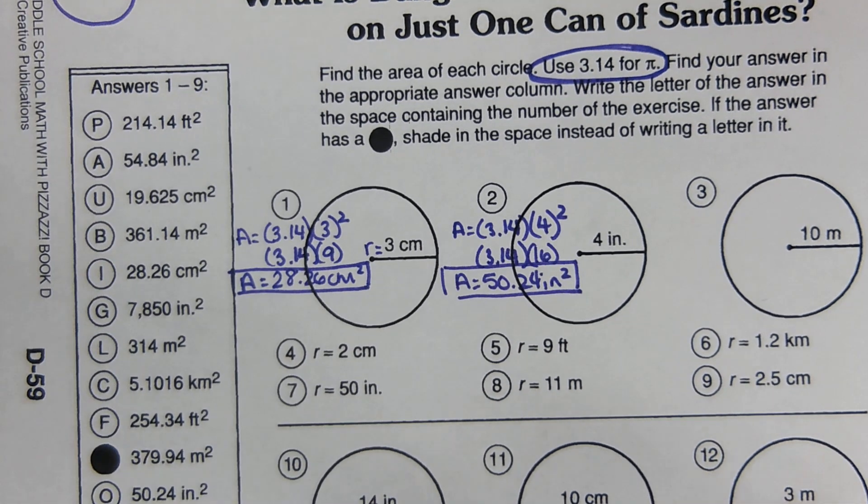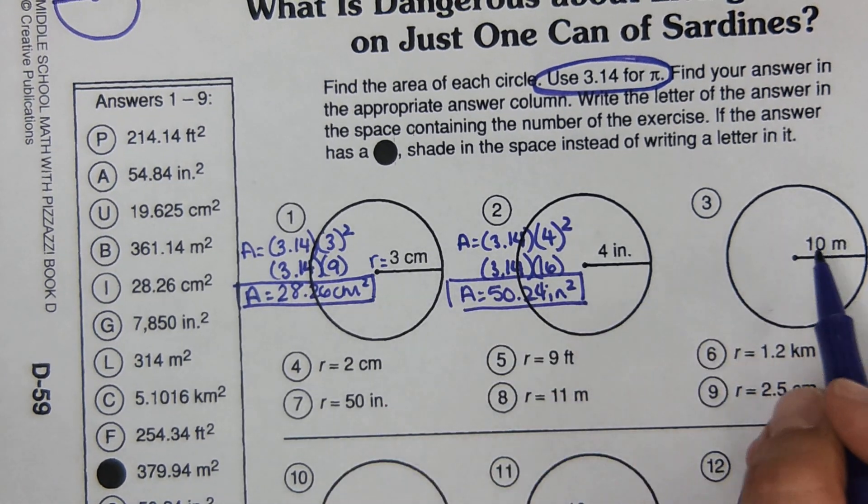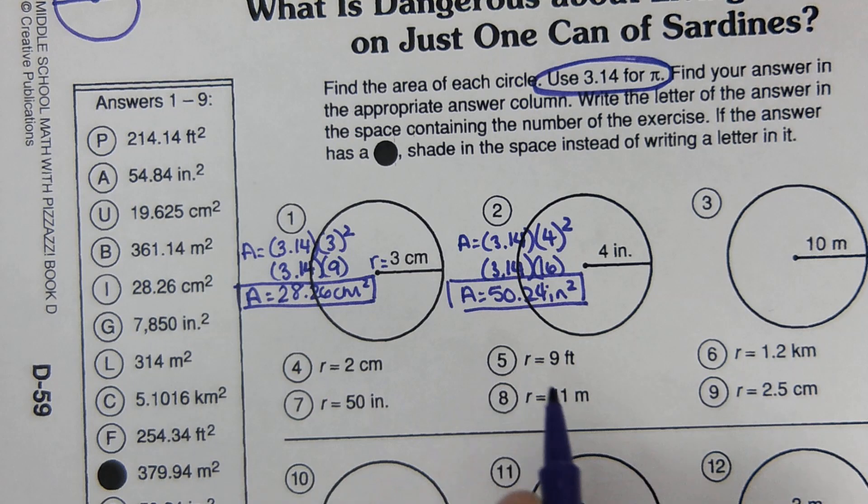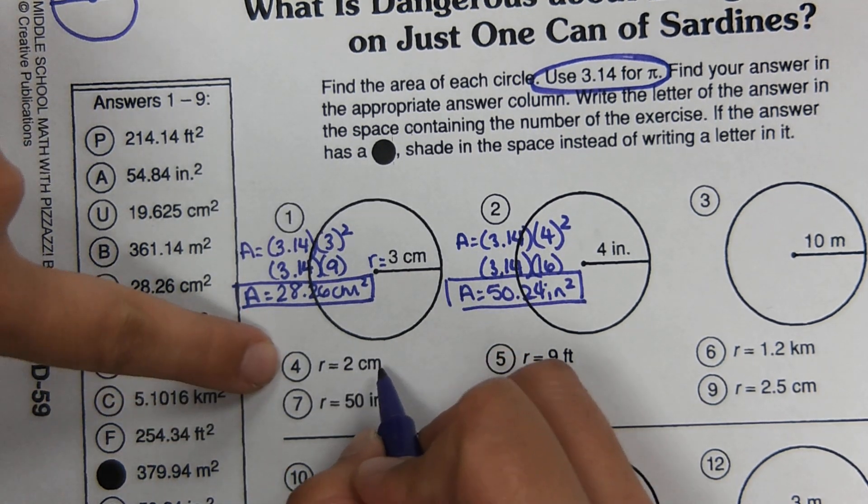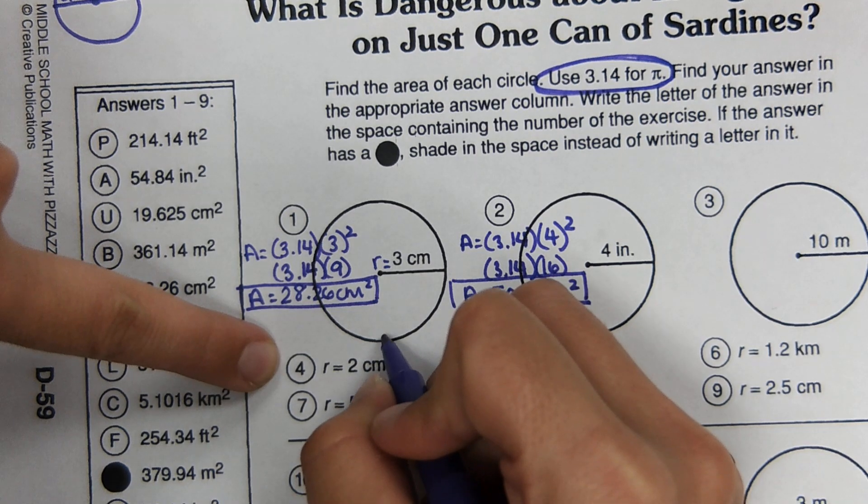Okay, and then we're going to skip number three, because I think we got that. Number four is a little bit different, because they don't show you a picture. They just tell you that the radius is two centimeters.